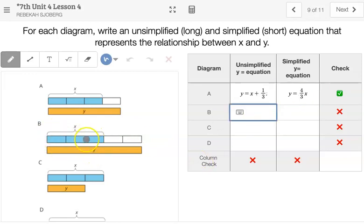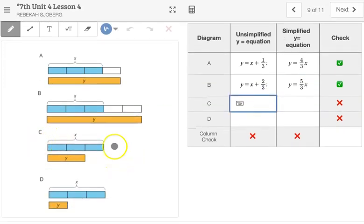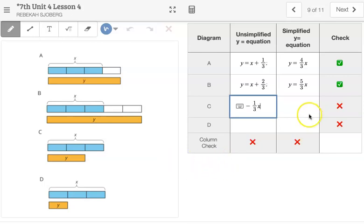In B, if I start with this X, which is in three parts, and then we have two more of them, Y equals X plus 2 thirds X. If I want to simplify it, it looks like Y equals 5 thirds X. For C, it looks like I started with this full 3 thirds X, but I took away one of them to get to Y. So Y equals X minus 1 third X. And it looks like what was left is Y equals 2 thirds X.